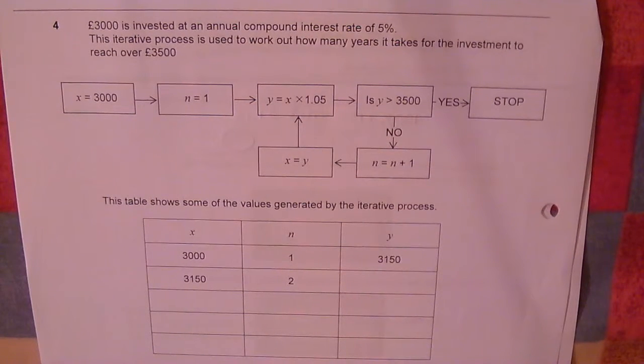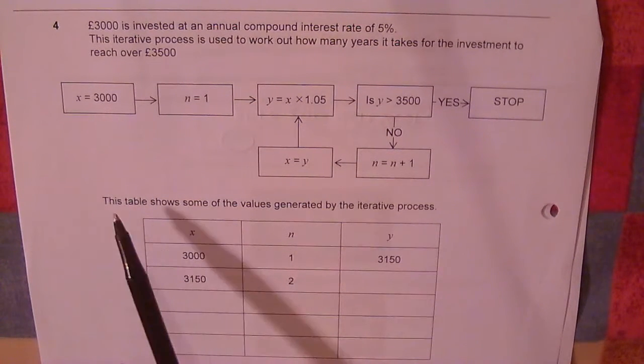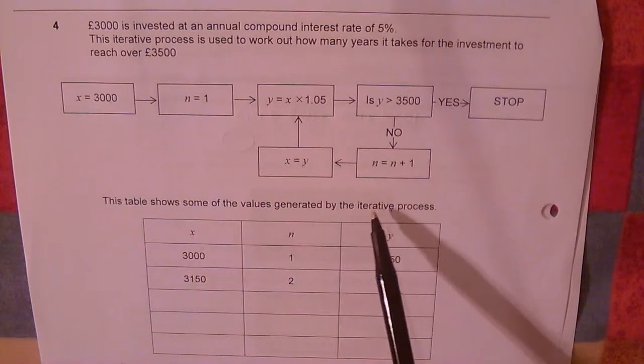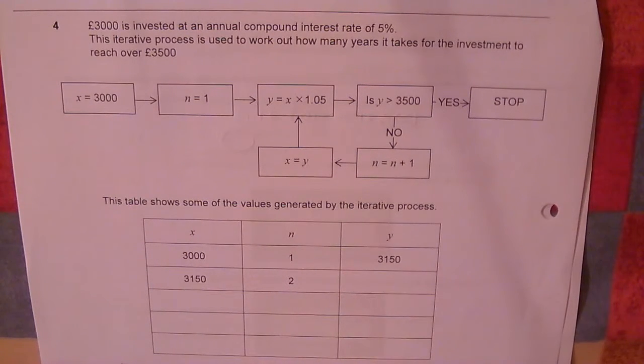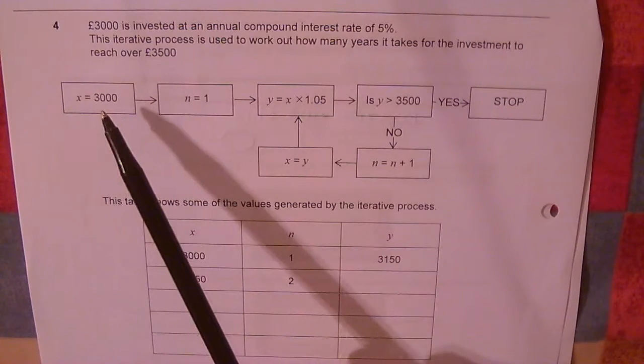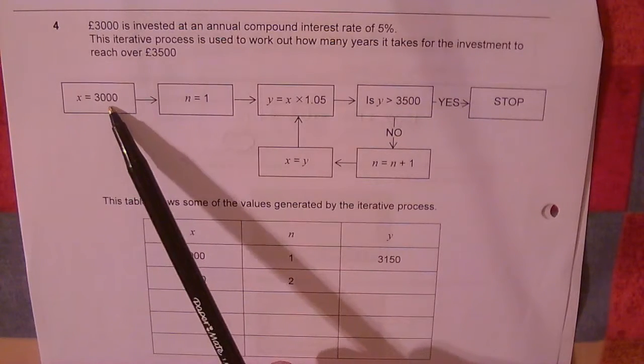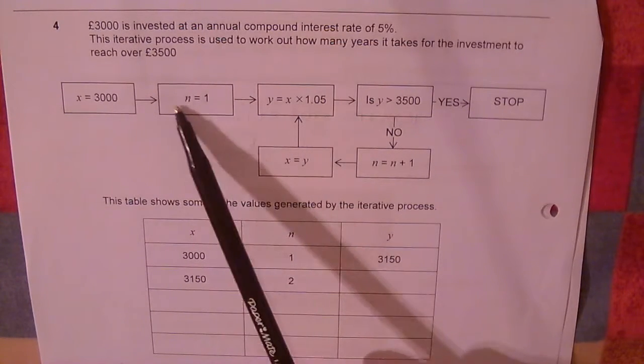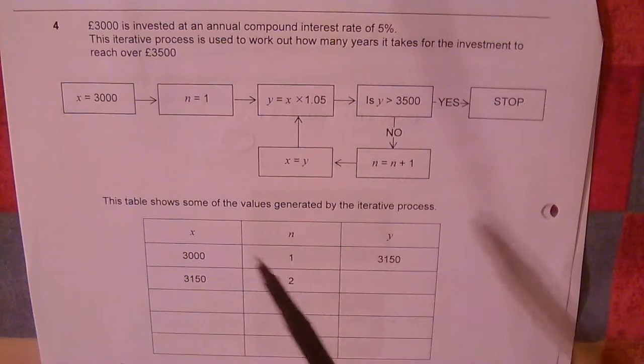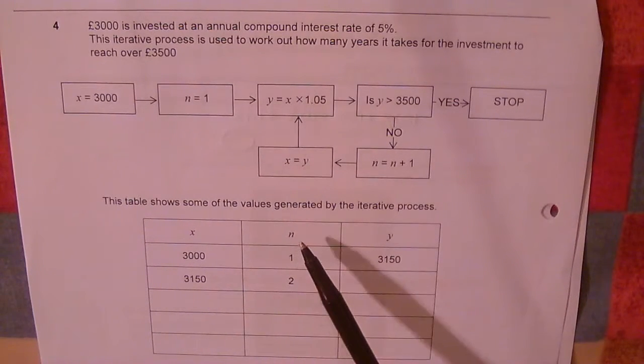So let's have a look at what this is talking about. This table shows some of the values generated by the iterative process. I've got a flow diagram and this is my input point. £3,000 is invested. n equals 1. That's just telling me this is my first iteration.